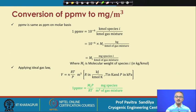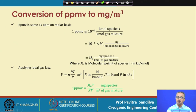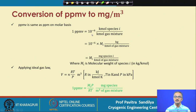First, we see how to convert PPMV to milligrams per cubic meter. One PPMV is defined as 10 to the power minus 6 kilomoles of species i per kilomole of gas mixture. That is, 1 part per million means 1 kilomole of species i in 10 to the power 6 kilomoles of the gaseous mixture, and that is how we get 10 to the power minus 6 in the numerator.